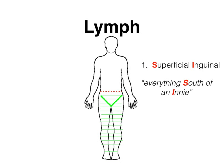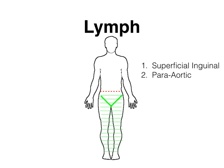In review so far: superficial inguinal lymph nodes drain everything below the belly button all the way down to the feet, with two exceptions — it does not drain the gonads, and it does not drain the lateral ankles or lateral foot. The lateral ankle or lateral foot drains to the popliteal lymph nodes behind our knees, and the gonads drain to the para-aortic lymph nodes, which we'll discuss next.